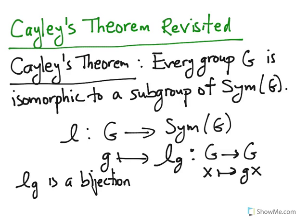Once it's a bijection, then we need to show that L is a homomorphism. And since we want G to be isomorphic to a subgroup of sym G, we also want L to be injective. An injective homomorphism is called a monomorphism, so we show that L is a mono.